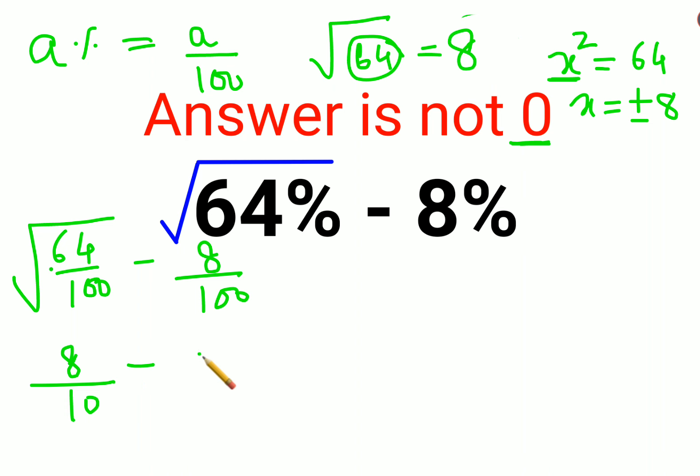Now let's get back to our sum. We have 8 upon 10. What we can do is take the LCM. The LCM is 100. In order to make this 100,